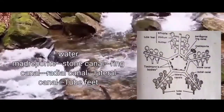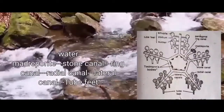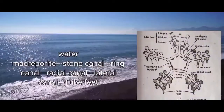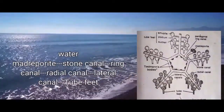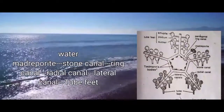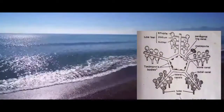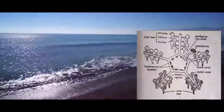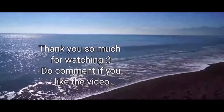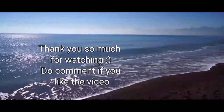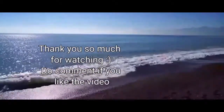Water after entering the madriporite goes to the stone canal, then the ring canal, then the radial canal, then the lateral canal, and finally to the tube feet. This system brings about locomotion by providing a hydraulic pressure mechanism. I hope you are clear about the concept of the water vascular system in starfish. Thank you so much for watching.